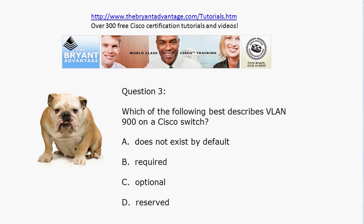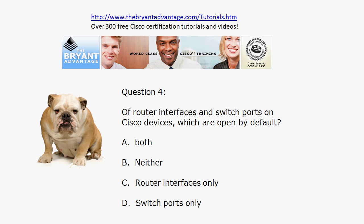Let's go to question three. Which of the following phrases or words best describes VLAN 900 on a Cisco switch? And then finally, question four: of router interfaces and switch ports on Cisco routers and switches, which are open by default? That's actually a bit of a security concern — and something that can drive you a little crazy — which we'll look at here in just a moment.